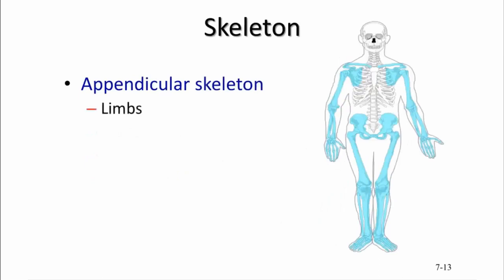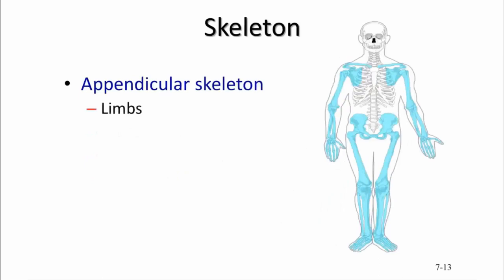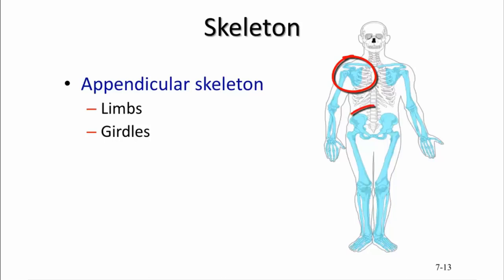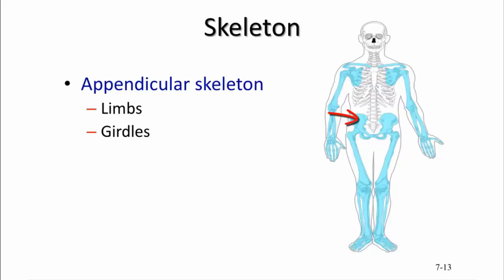The appendicular skeleton refers to the appendages — that includes your limbs, your arms and your legs, and your girdles, which includes your shoulder girdle or pectoral girdle and your pelvic girdle. The pelvic girdle is composed of the coxal bones, and they are part of the appendicular skeleton.